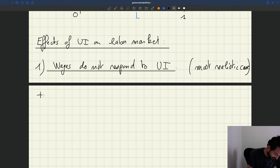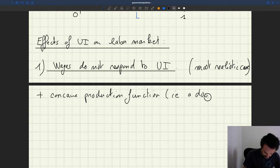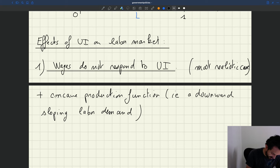So we have wages that do not respond to UI plus a concave production function, i.e. a downward sloping labor demand.